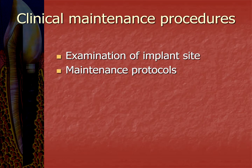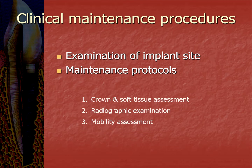Clinical maintenance procedures include examination of the implant site and various maintenance protocols. Under examination of the implant site, crown and soft tissue assessment involves assessing probing depth, bleeding on probing, occlusal evaluation, and pink and white aesthetic scores. Radiographic examination should be done every year and is an important tool to detect osseointegration; early signs of failure include a thin radiolucent line surrounding the implant. Mobility assessment can be done using the percussion test, cutting torque test, and periotest.